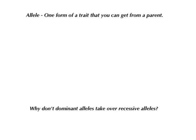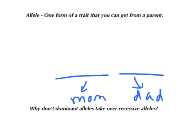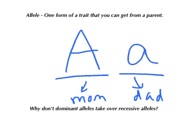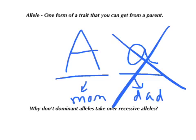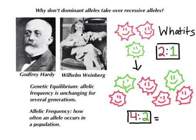Before we get to different mechanisms, we need to go back to our genes. Remember that an allele is just one form of a trait that you can get from a parent. We have two alleles for every single trait — one from mom and one from dad. We have dominant alleles shown by capital letters and recessive alleles shown by lowercase letters. Even after Mendel figured all of this out, early evolutionary scientists were confused as to why dominant alleles didn't just completely take over recessive alleles. The question is: why don't dominant alleles completely take over recessive alleles?